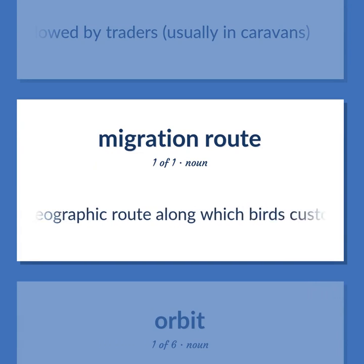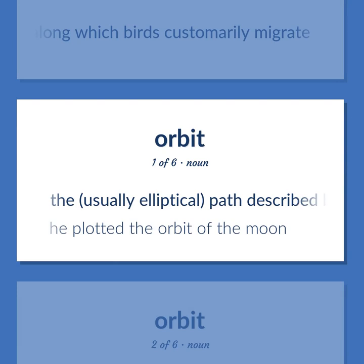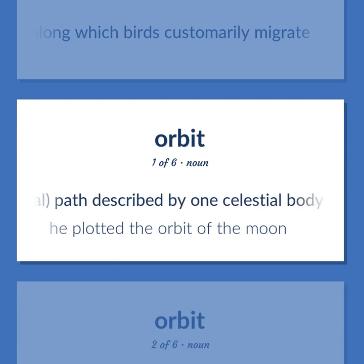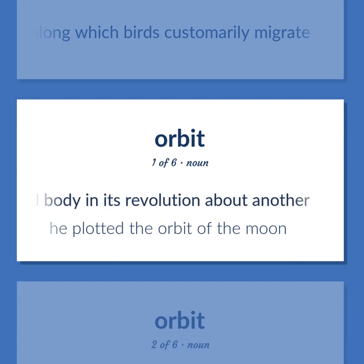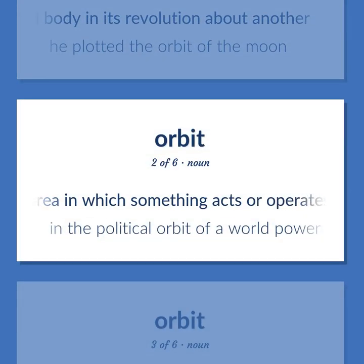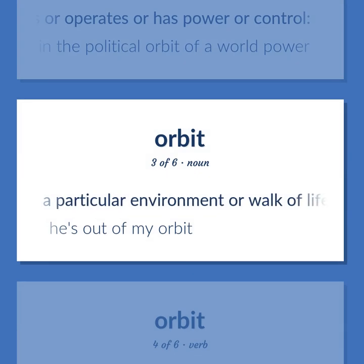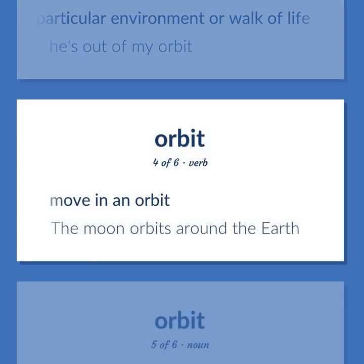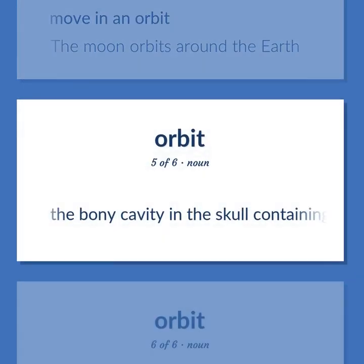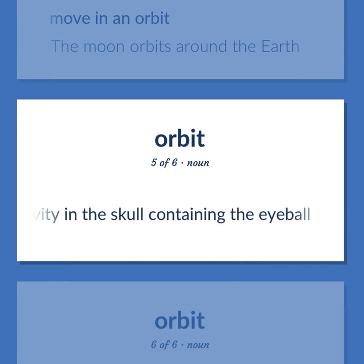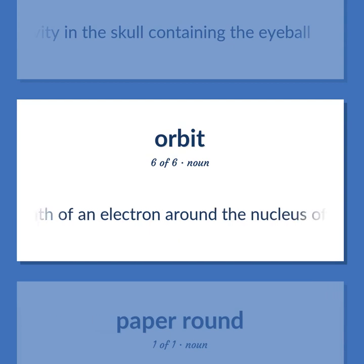The geographic route along which birds customarily migrate. The usually elliptical path described by one celestial body in its revolution about another. He plotted the orbit of the moon. An area in which something acts or operates or has power or control. In the political orbit of a world power. A particular environment or walk of life. He's out of my orbit. Move in an orbit. The moon orbits around the earth. The bony cavity in the skull containing the eyeball. The path of an electron around the nucleus of an atom. The route taken when delivering newspapers every day.